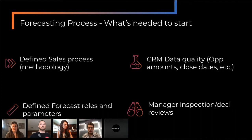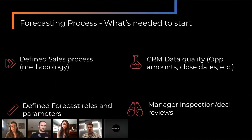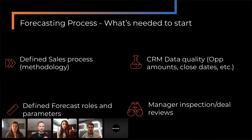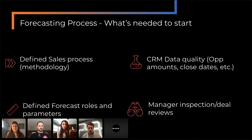The third piece is define forecast roles and parameters. What I mean is you have to understand, for each individual rep, for a first-line leader, for a VP, for an SVP, what is the role they're playing in the forecast. In addition to that, we often have stages but we also have forecast categories. We use commit, expected, best case — what does that mean? What is expected? What is commit? What is best case? Defining all of those things so that it's clear, and then enabling on it, is critical.